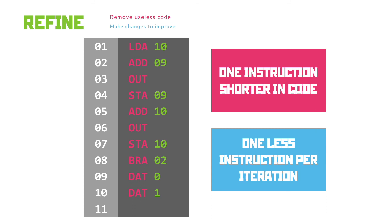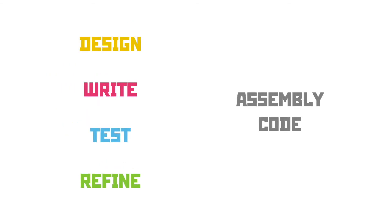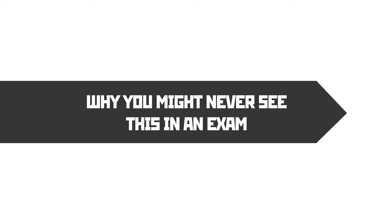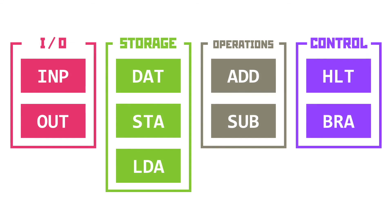That's all there really is to refinement — it's about spotting areas where you can make a saving in the length of code or instructions per iteration. If you look for HALT instructions immediately after jumps, they can usually be removed. Then you can look for a branch command that sends you back to a LOAD rather than actually doing something with the data, and then you're starting from a good place. That said, you may never actually see this topic in the practical exam — whilst theoretically they should ask questions about this topic at least once every three years, there is an overlap with content in the written exam meaning they can probably justify not asking questions about it in the practical exam.